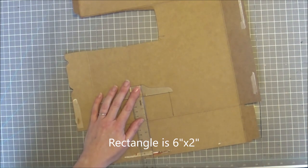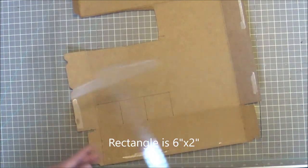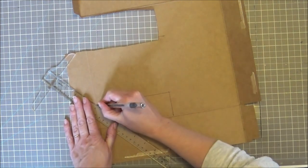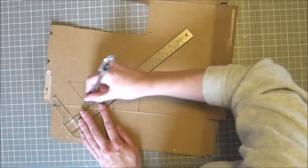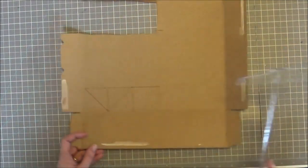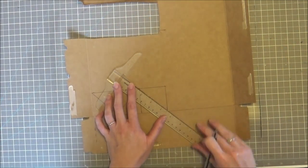I am using a leftover cereal box. I've drawn a rectangle that is six inches by two and then divided that up into two inch squares. Now I am drawing diagonal lines through my two inch square boxes and you can see the pattern there.